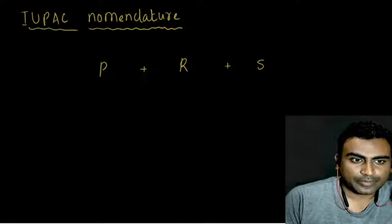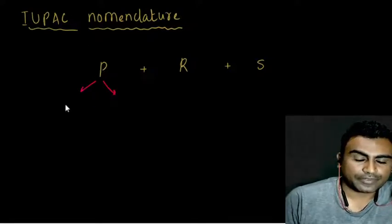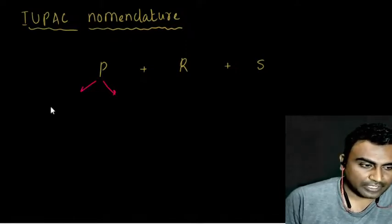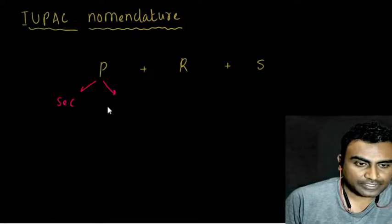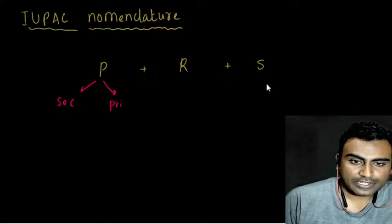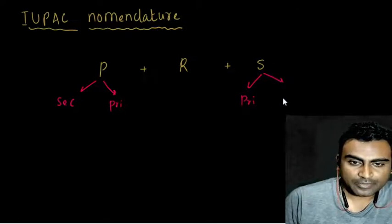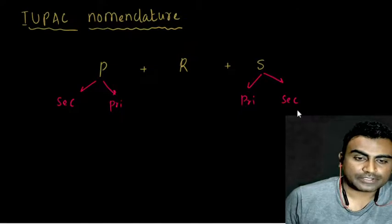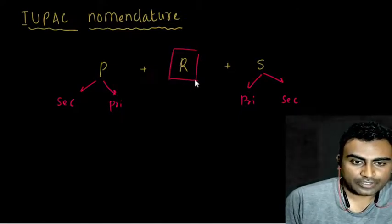We have two types of prefix: one is primary prefix and another is secondary prefix. In the name, secondary prefix comes first, then primary prefix. Similarly, in suffix, we again have two types: primary suffix and secondary suffix. There is no primary or secondary division for the root word.